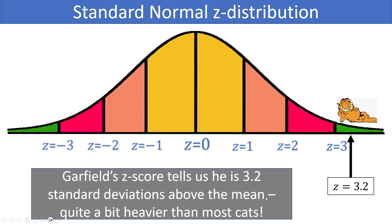From the empirical rule, 99.7% of observations on a normal distribution fall within 3 standard deviations of the mean. Since Garfield is 3.2 standard deviations above the mean, he's quite a bit heavier than your average cat — probably due to all the lasagna he eats.